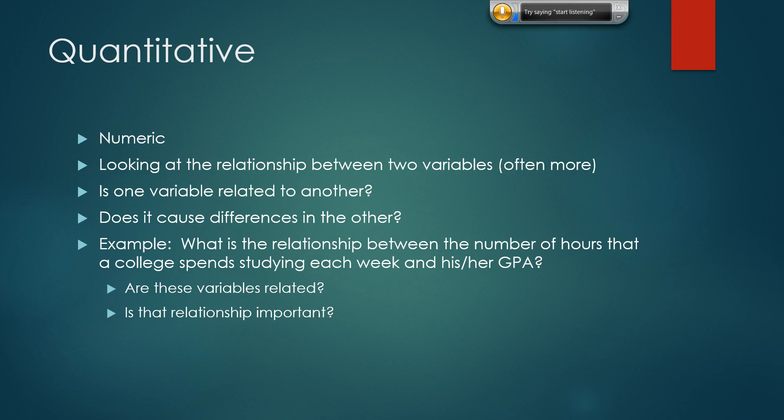Quantitative research is typically focused on numeric values and looking at the relationship between two or more variables. The core question is: is one variable related to another, or does it cause a difference in the other? For example: what is the relationship between the number of hours a college student spends studying each week and his or her GPA? We identify studying hours as one variable and think it might have a relationship to GPA, and there are quantitative methods that tell us whether that relationship is meaningful.